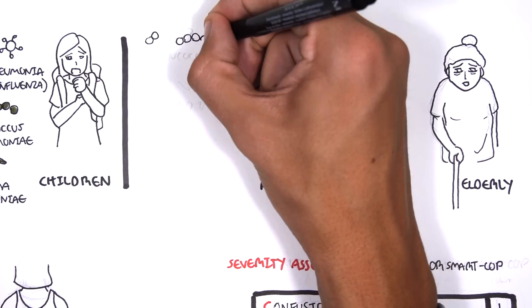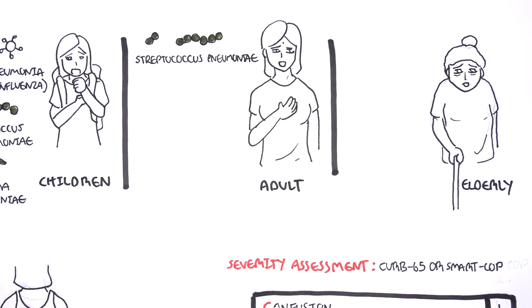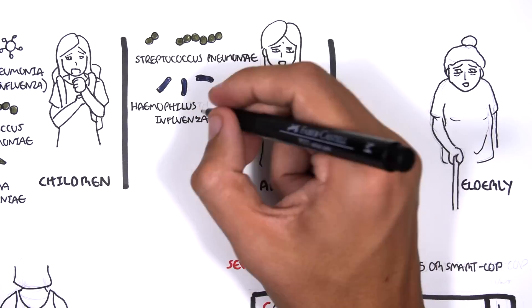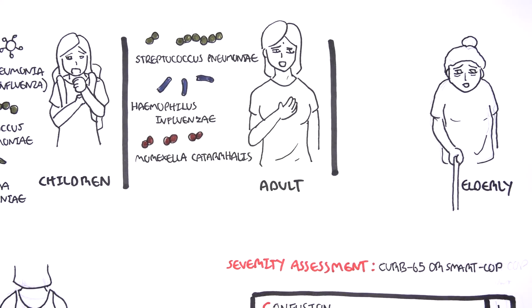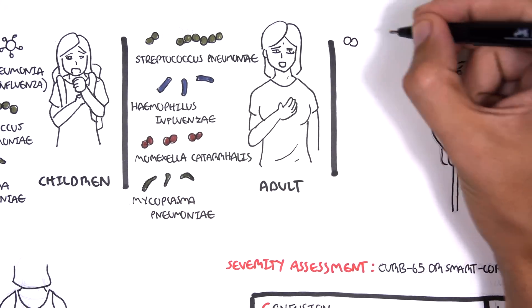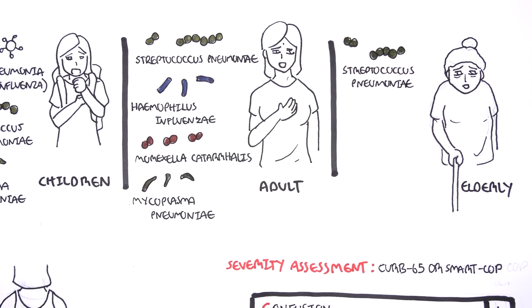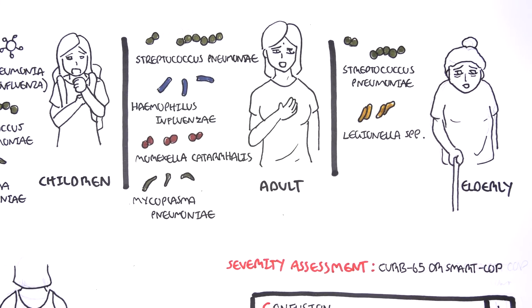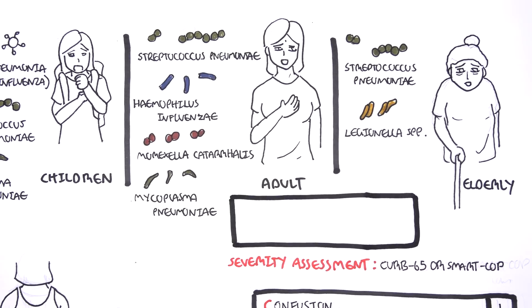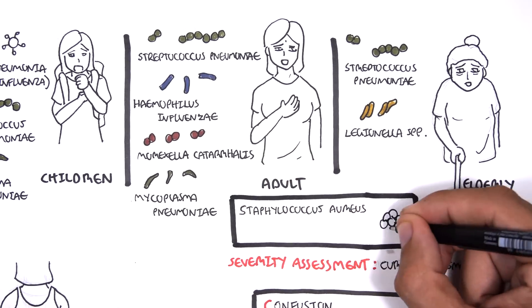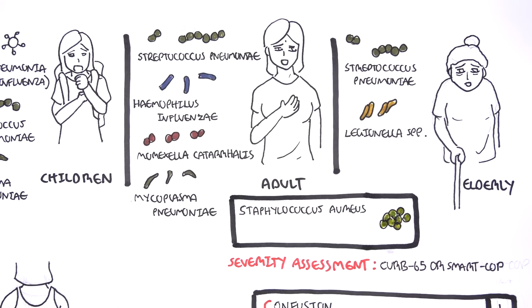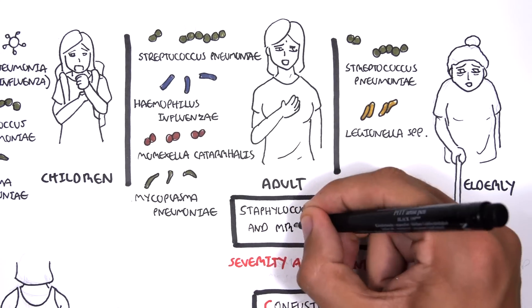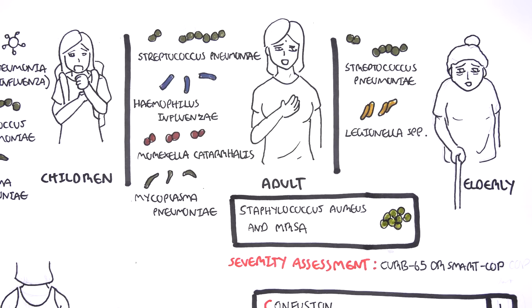For adults, the main causative agents include Streptococcus pneumoniae, Haemophilus influenzae, Moraxella catarrhalis, and Mycoplasma pneumoniae. In the elderly, Streptococcus pneumoniae again, and Legionella species are also common. There is also an increased rate of infection caused by Staphylococcus aureus as well as methicillin-resistant Staphylococcus aureus (MRSA), which are common and problematic causes of pneumonia acquired from the hospital.